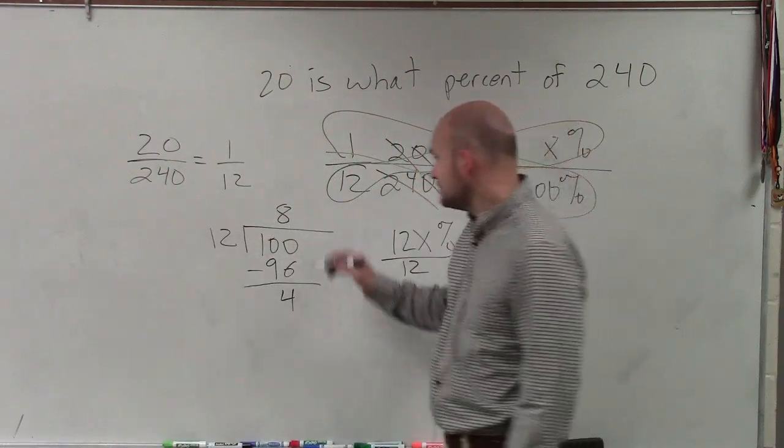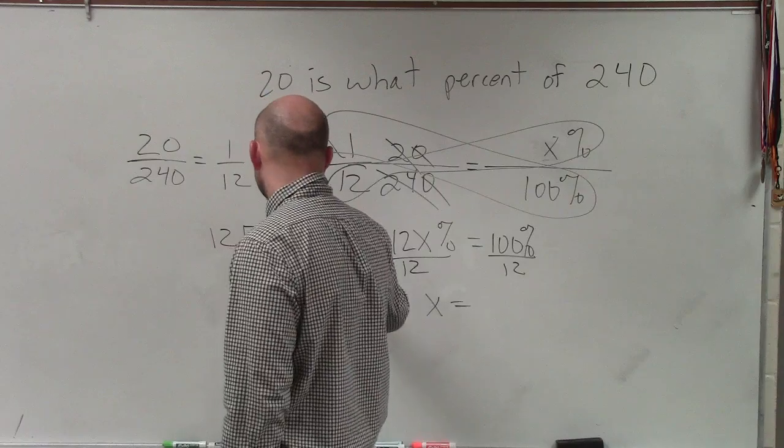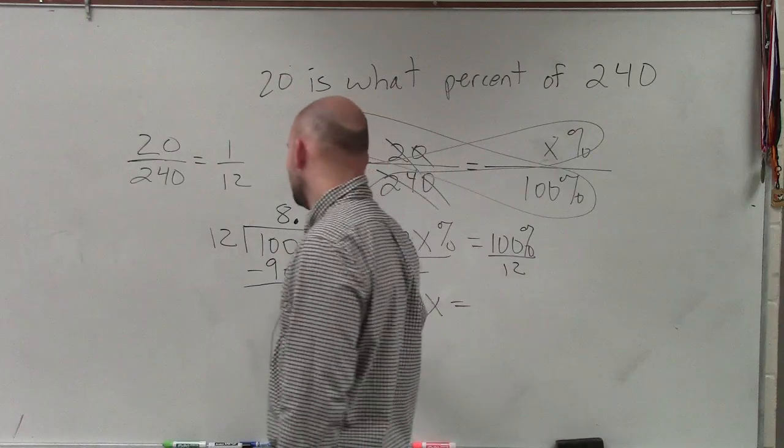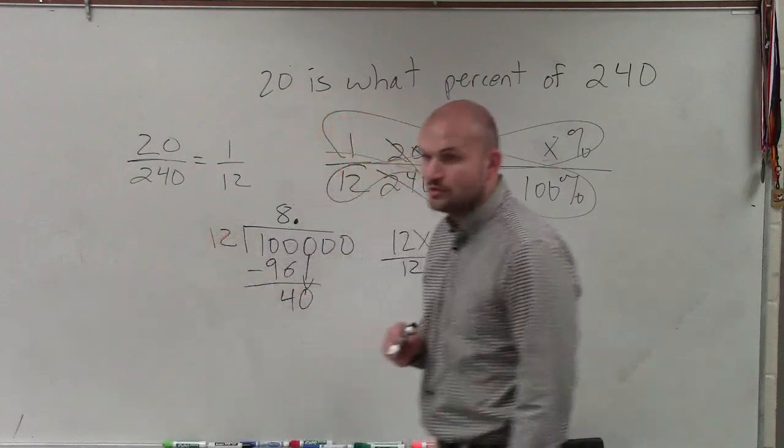I cannot divide 12 into 4, so I have to create a decimal point. And when I create a decimal point, I bring an unlimited set of zeros. Then I bring down the 0. 12 does go into 40, though.